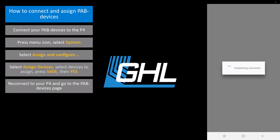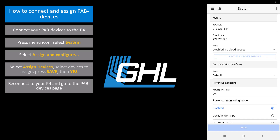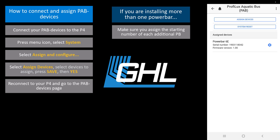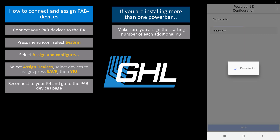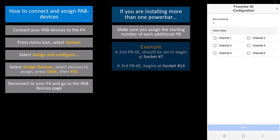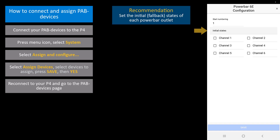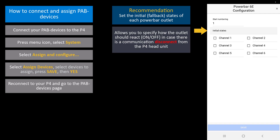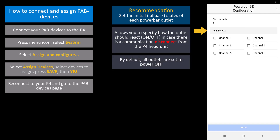Reconnect to your P4 and go back to the PAB Settings page. If you are installing more than one power bar to your P4, make sure you assign the numbering of the second power bar by pressing the blue gear icon. Since the first power bar is located on switch channels 1 through 6, the second power bar should be set to start at 7. A third power bar 6e would begin at socket number 13. On this same page, you can also set the fallback state of the selected power bar. PAB power bars give you the option to specify which outlets should be on or off in case there is ever a PAB communication disconnect from the Prophylax head unit. By default, all outlets are set to power off. If you want certain outlets to stay on in case of a disconnect, select those outlets and press Save.